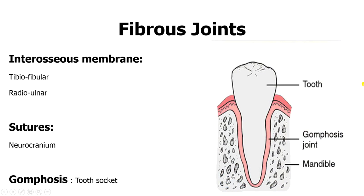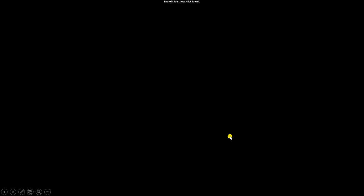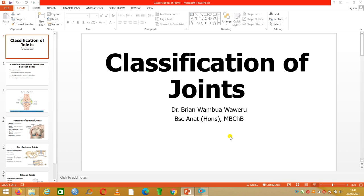Then you have the tooth socket — the gomphosis joint — between the socket from the mandible and the tooth. There is fibrous tissue connecting the tooth to the mandible or the maxilla. Thank you very much, and if you have any questions you can leave them in the comment section below.